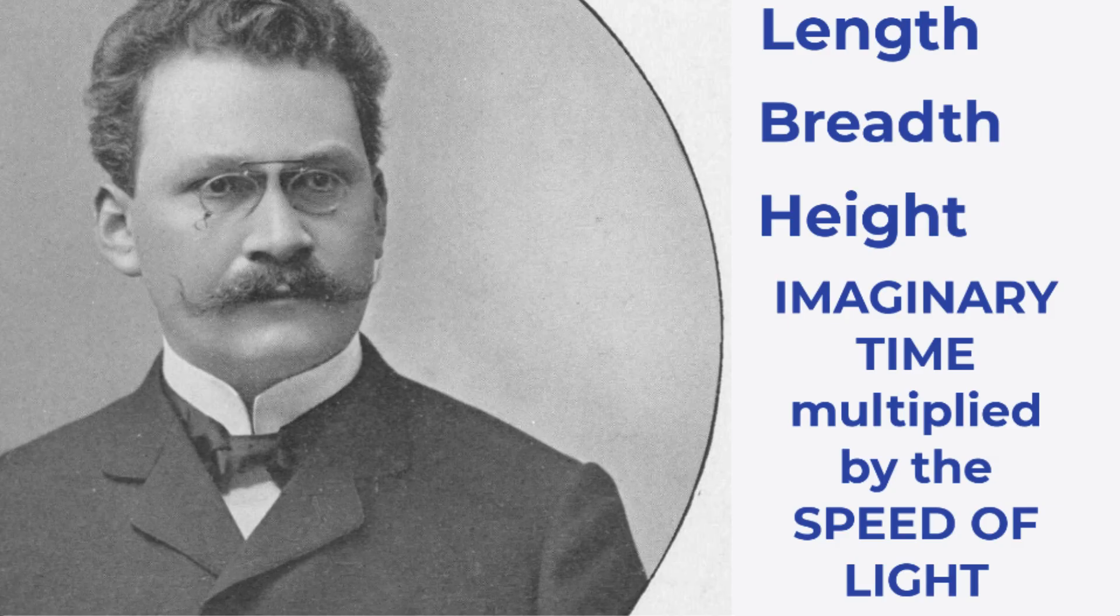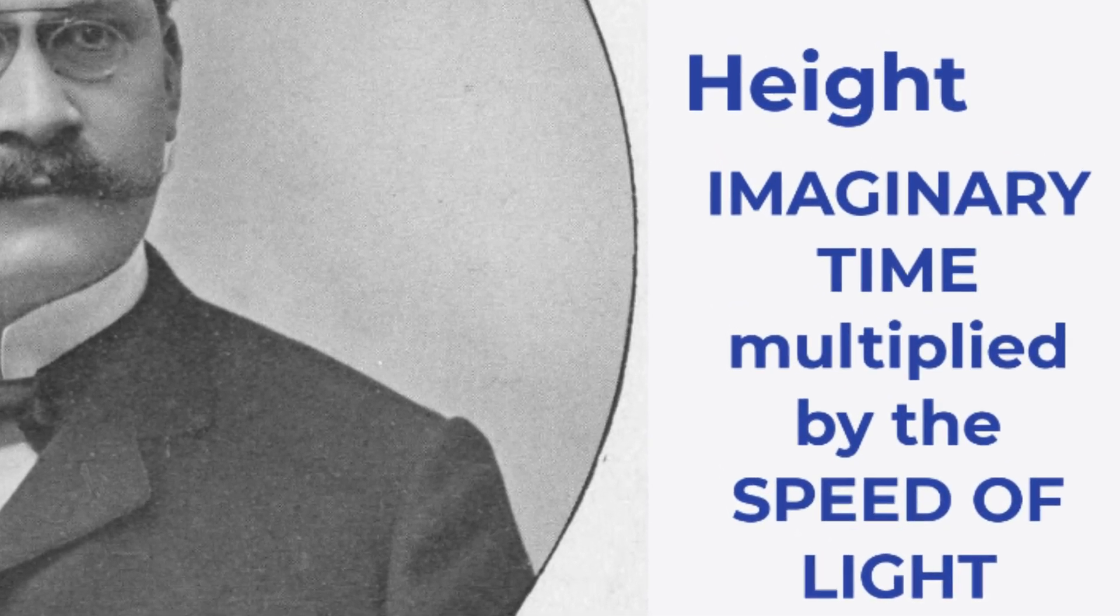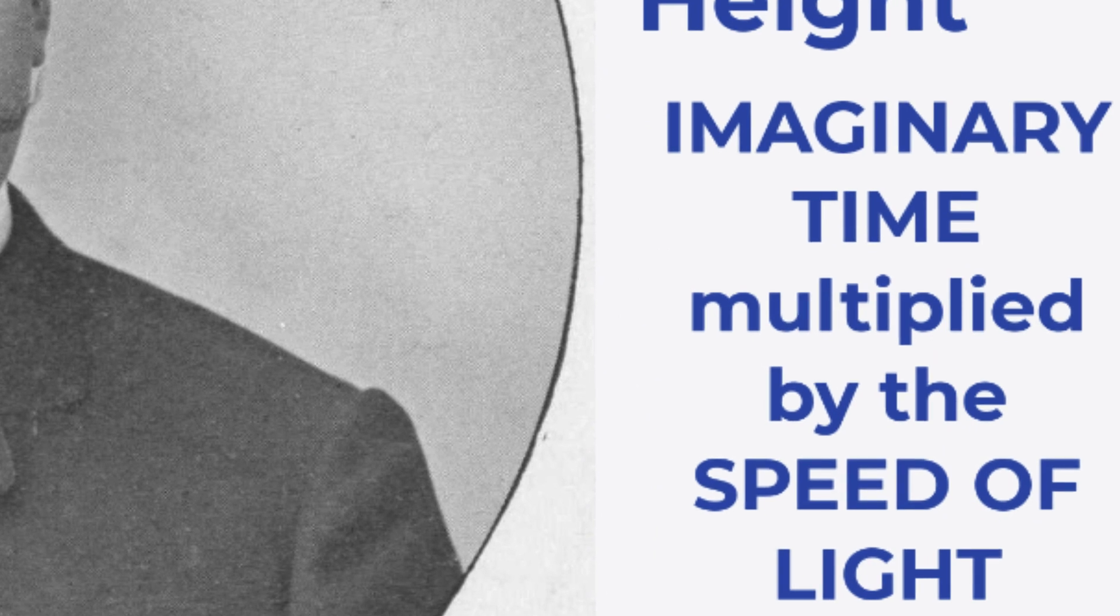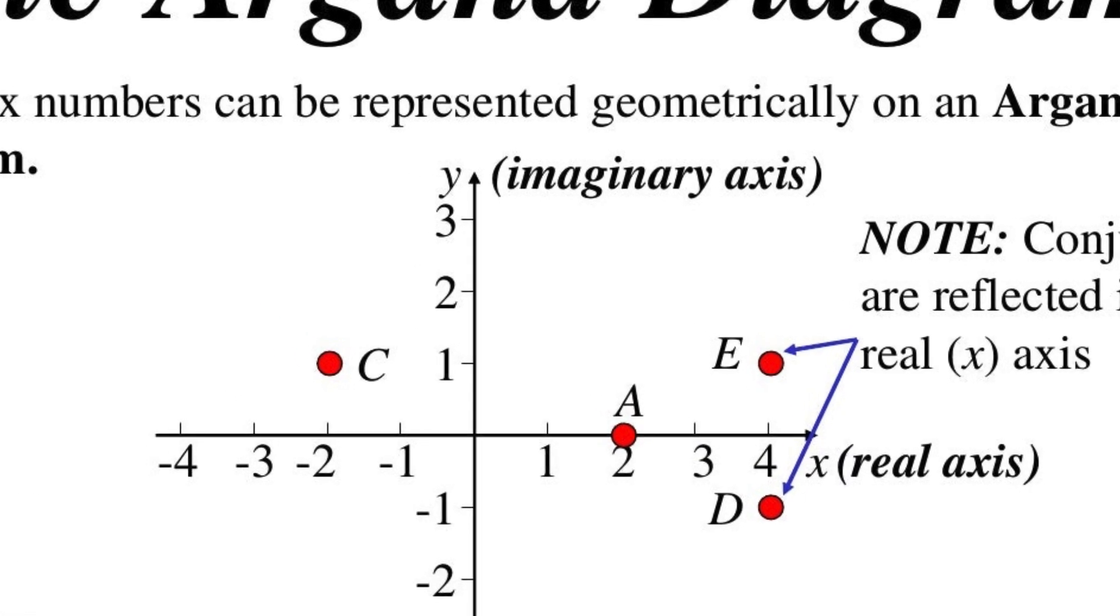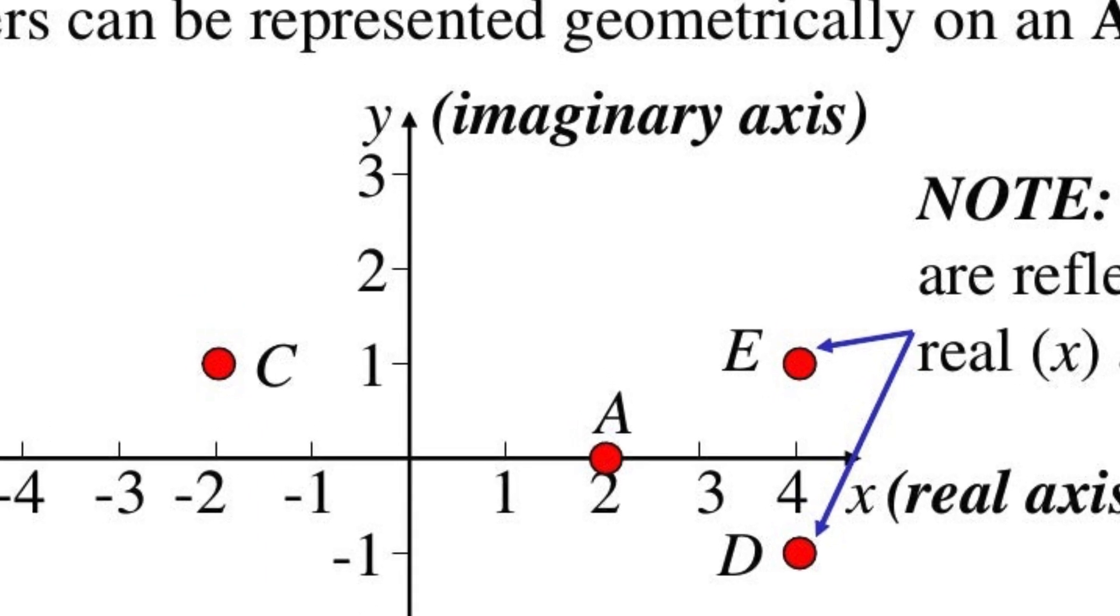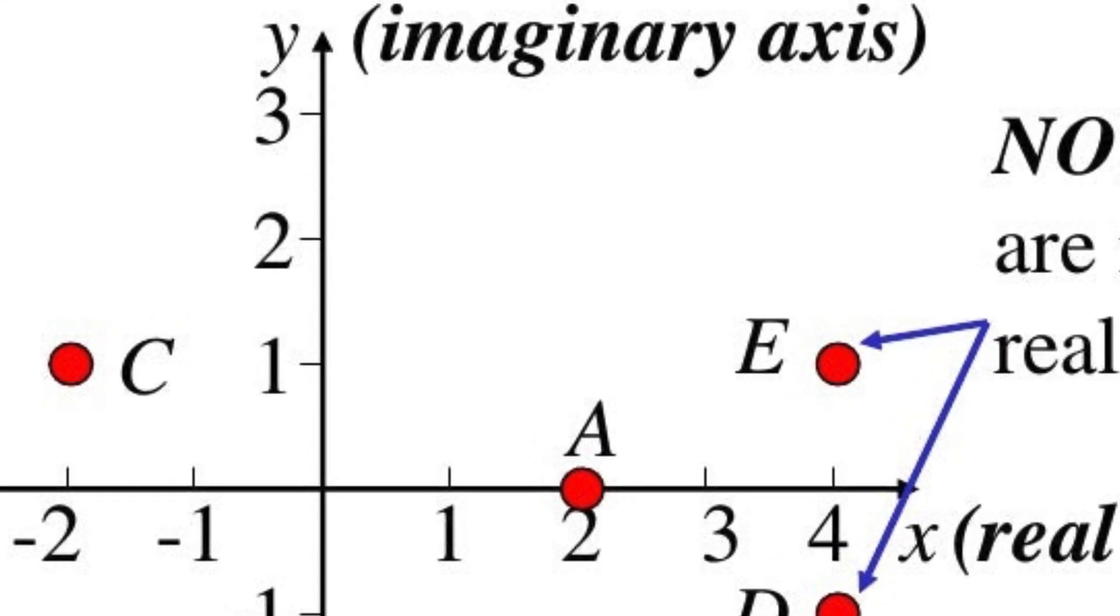So if I multiply the speed of light by time and by the imaginary number, I'll make another axis at right angles to the other three, just as in the Argand diagram. That will get four completely equivalent dimensions, which I can call space-time.